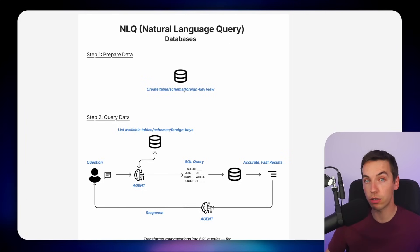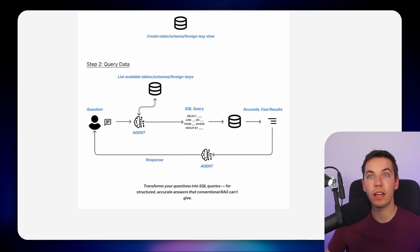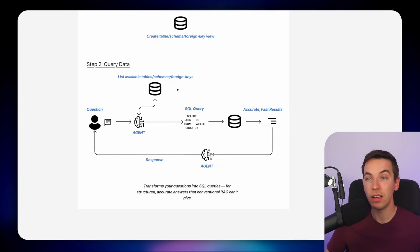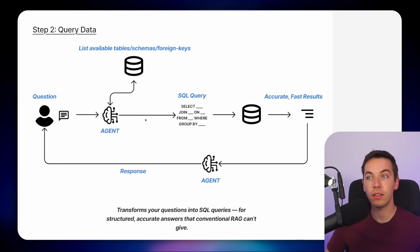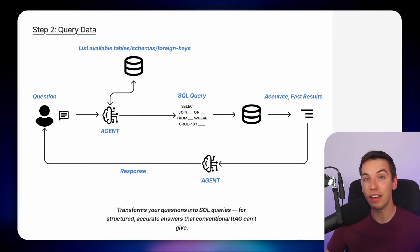There are multiple approaches for providing schema context and I'll be going through a few in this video. At the inference stage, you ask the agent a question, which goes to the AI agent that gets context of your database — either hard-coded in the system prompt or through an available tool. From there the agent creates a complex SQL query that runs directly against the database for accurate, lightning-fast results. The database responds with the data and the agent decides how to handle that response back to the user.